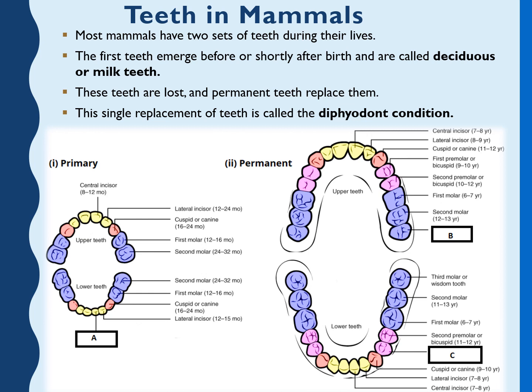Teeth are positioned in alveolar pockets and connected to the bone by a suspensory periodontal ligament. Primary dentition is composed of 20 teeth, with five teeth in each quadrant: two incisors (central and lateral), one canine, and two molars. In primary dentition, the teeth are labeled a, b, c, d, and e.